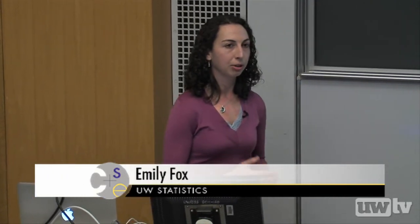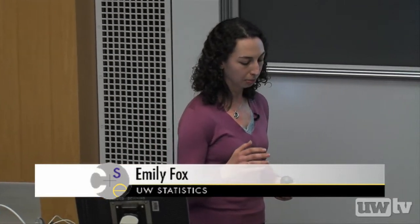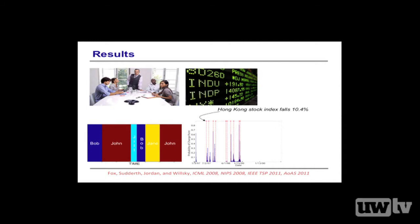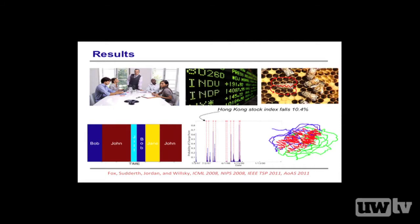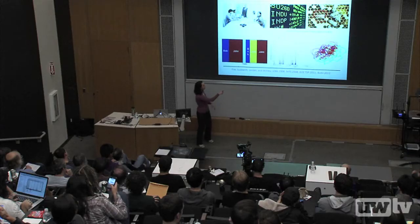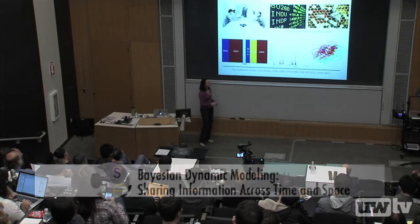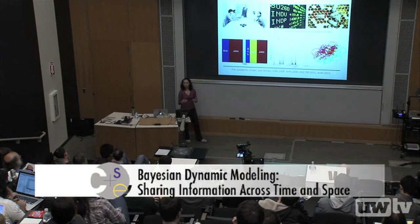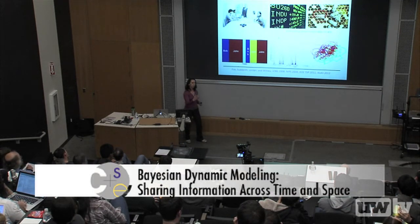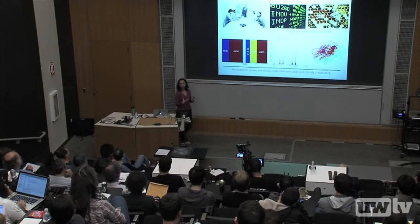Markov switching processes based on the sticky HDP-HMM were also useful in detecting changes of volatility in stock indices and segmenting honeybee dances. Notably, in both cases — stock data and honeybee dances — we used exactly the same model. In one case we passed daily returns of a stock index, in the other these tracks of honeybees, and it inferred the underlying structure without being aware of which application it was looking at.